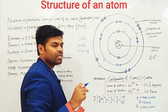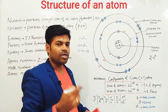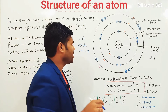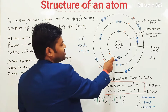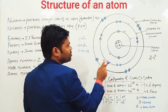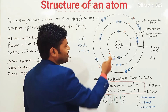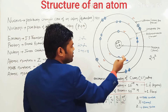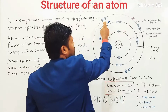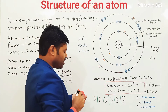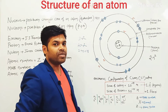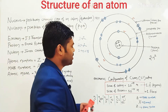So in chlorine, the first shell will have 2 electrons, second shell will have 8 electrons. So 8 plus 2 is equal to 10, and the remaining is 7. So the last shell — that is M shell, the number 3 shell — has 7 electrons. In this way, electrons are distributed around the shells or orbits of the atom.